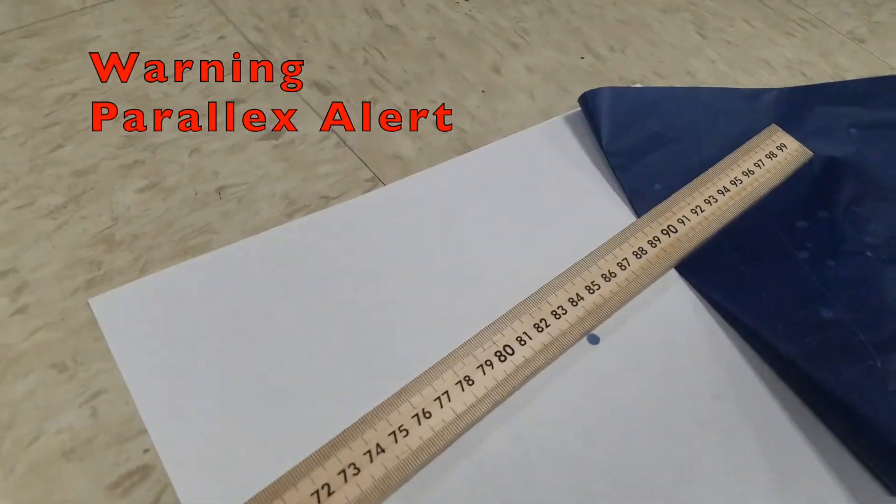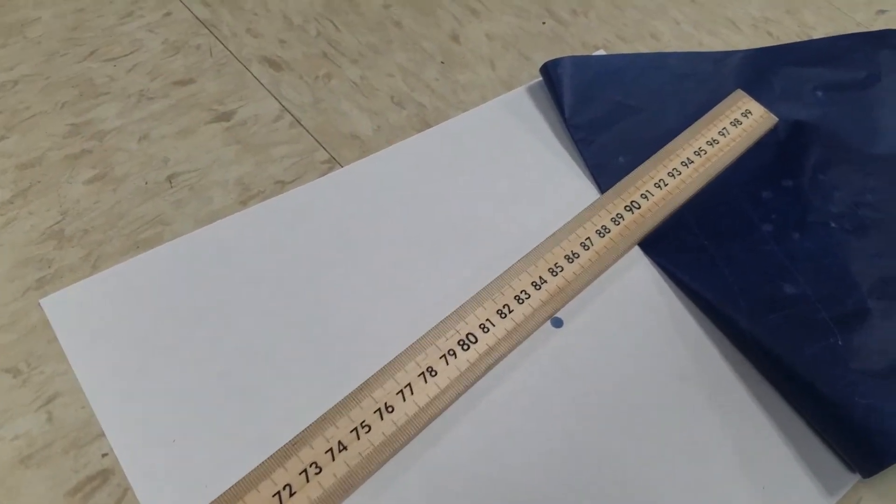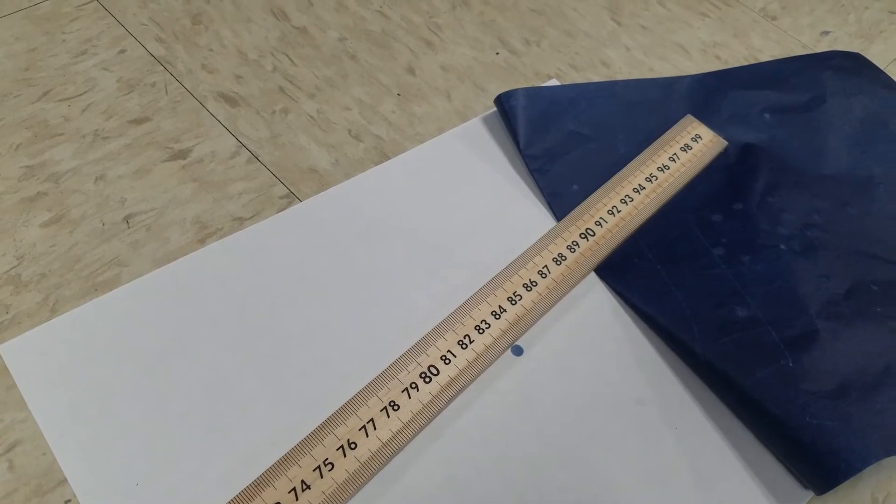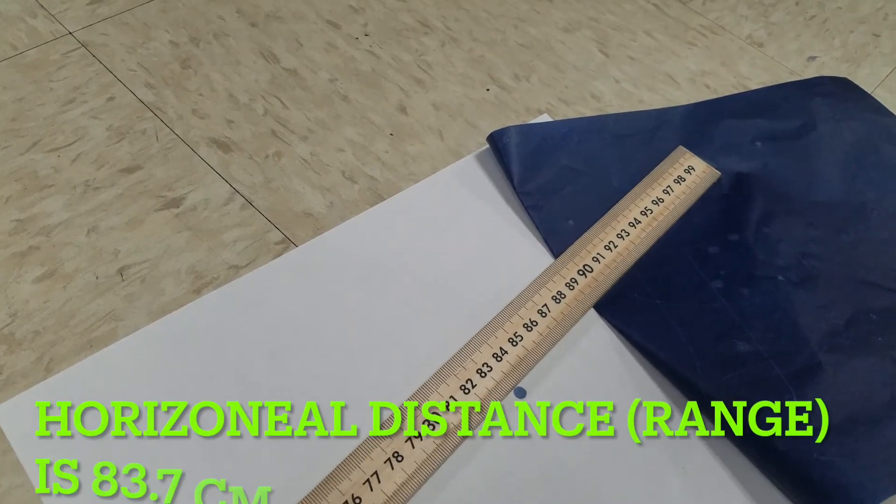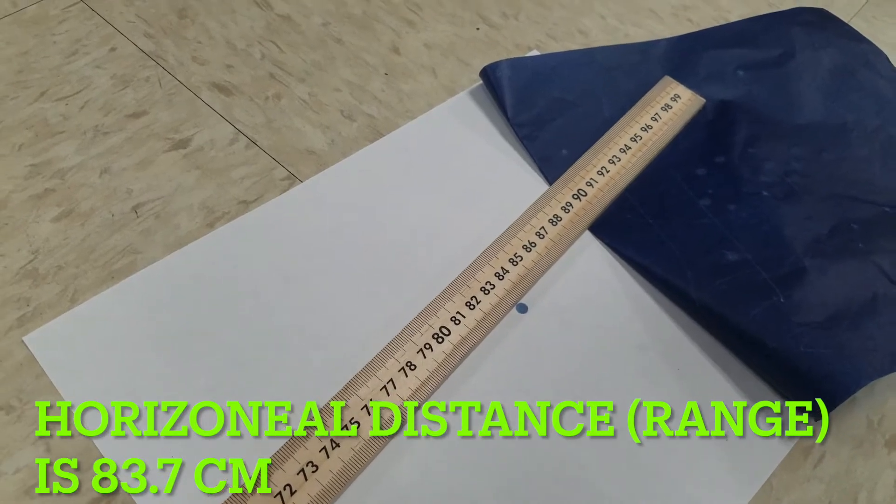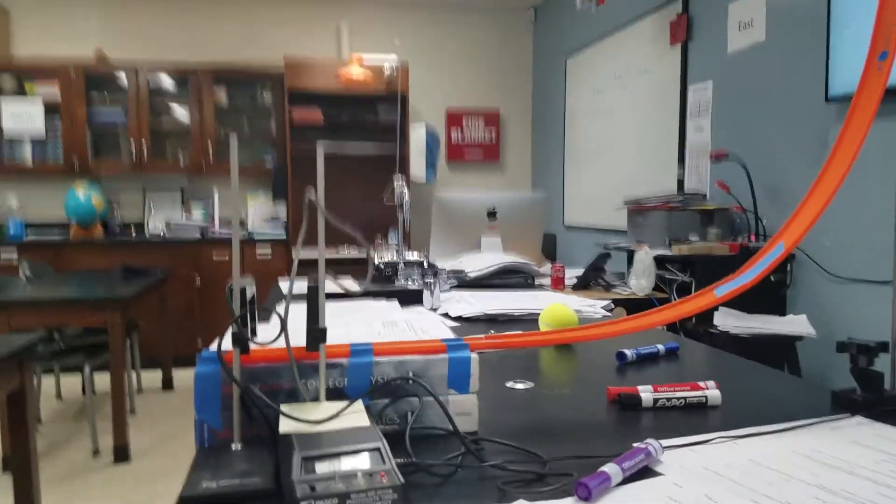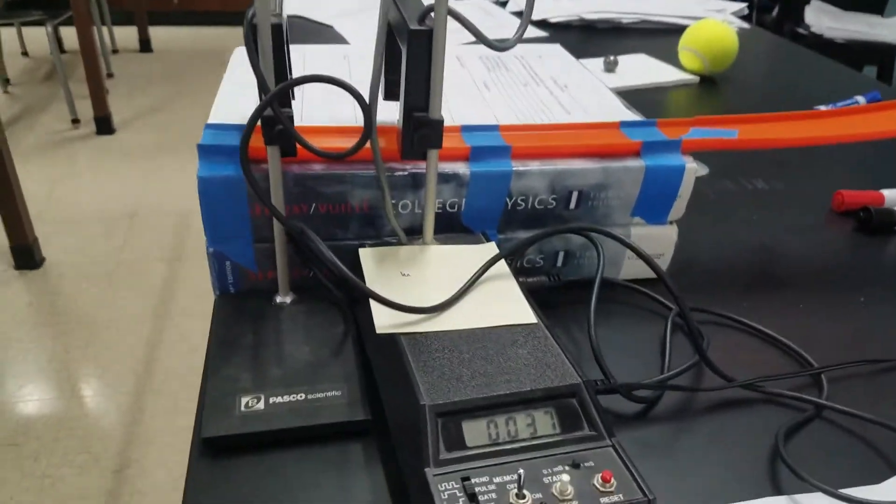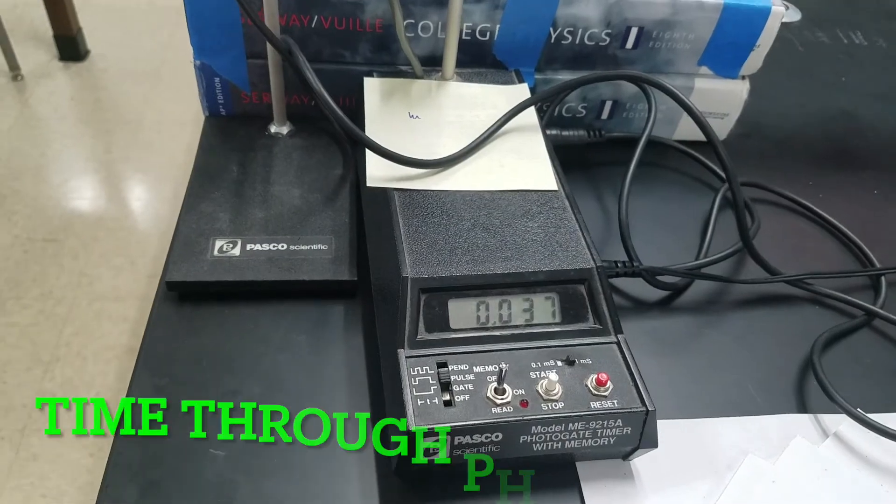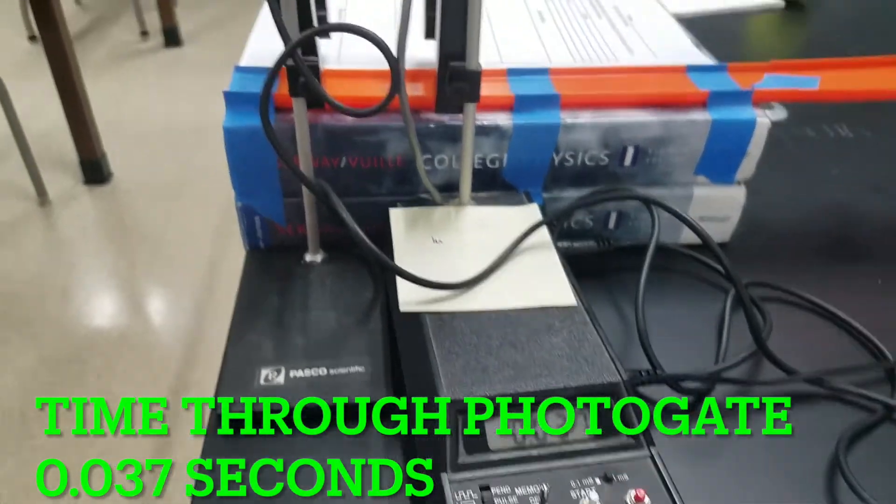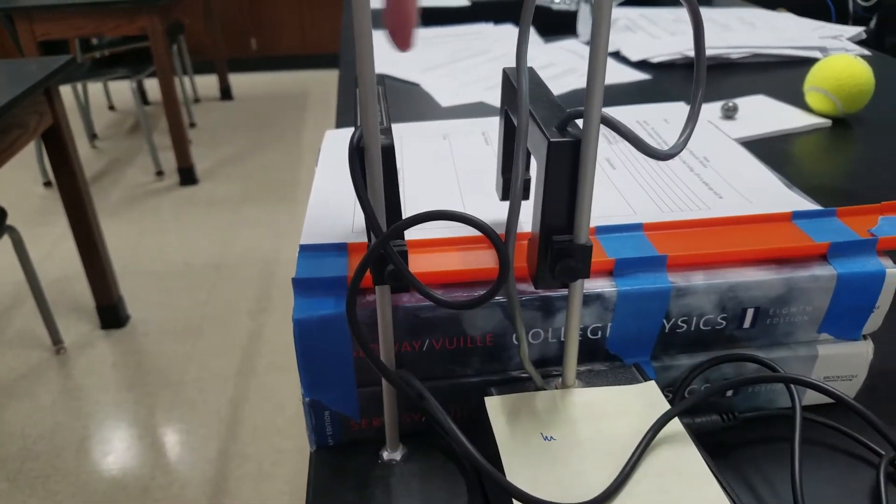So it's about 83.7 centimeters across the floor. So its range is 83.7 centimeters and the time to the photo gate is 0.037 seconds. So it took 0.037 seconds to go between here.